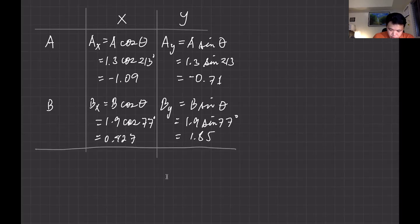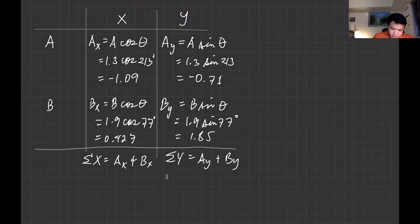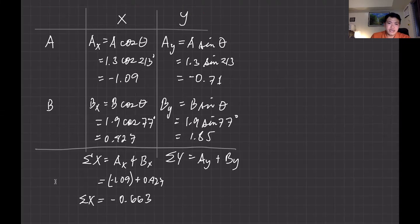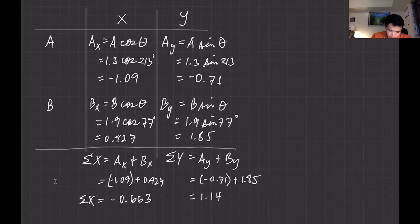Next step: get the summation of all the x-components and summation of all the y-components. Summation of x equals Ax plus Bx, and summation of y equals Ay plus By. So that's negative 1.09 plus 0.427, giving summation of x = negative 0.663 kilometers. For summation of y: negative 0.71 plus 1.85 = positive 1.14 kilometers.